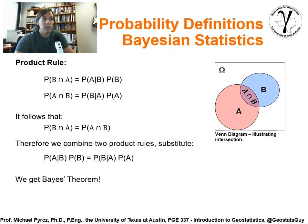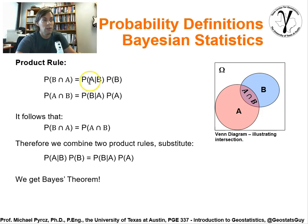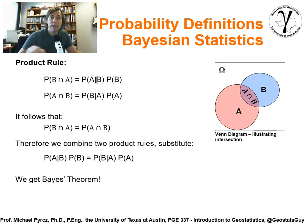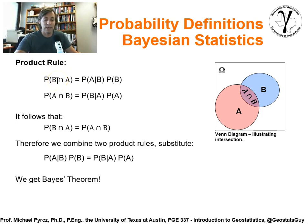We already introduced the product rule. The product rule was a result of just manipulation of the calculation of a conditional probability. Recall, the conditional probability — the probability of A given B — was simply equal to the joint probability of B and A intersection with A, divided by the probability of B. By a simple manipulation of taking the probability of B out of the denominator and putting it on the other side, we get the product rule. The probability of B and A, or the intersection of B and A, equals the probability of A intersection with B.